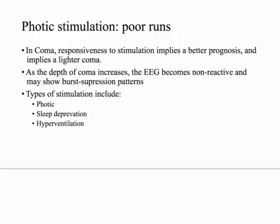Photic stimulation: there are different ways to stimulate and try to bring on an abnormal EEG if you're suspecting something. These are non-specific, but if you have high clinical suspicion, you do these stimulations and if it brings out the EEG finding you're suspecting, that's important. In a coma, responsiveness to stimulation also implies a better prognosis — if you pinch somebody or shine light in their face and the EEG responds, that implies a very light coma. The deeper the coma, the more non-reactive the EEG will become, and it may even show burst suppression patterns.